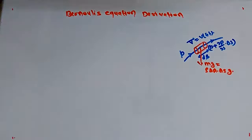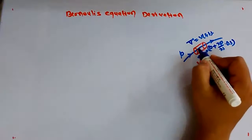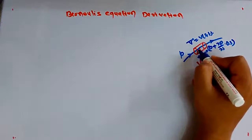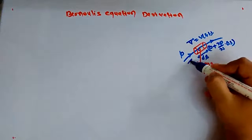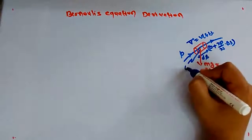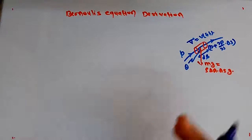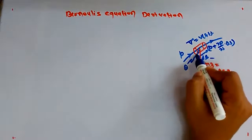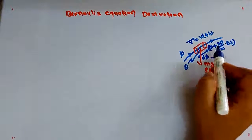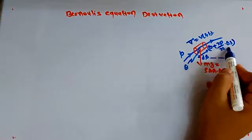The fluid element makes an angle theta with the streamline. When we do the force balance, we split the components accordingly. The vertical height of the fluid element is delta z.